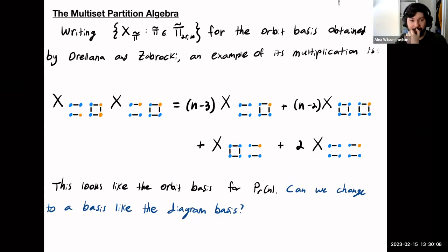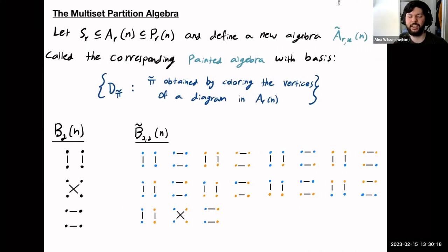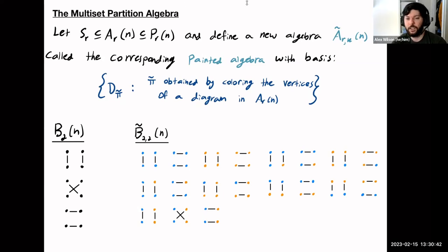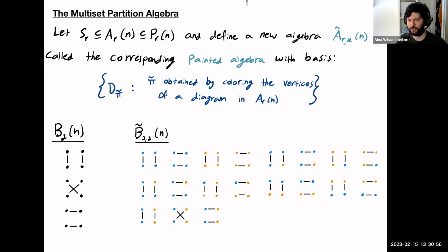The good news is I did. In order to tell you about that, I need to take what might feel like a detour and tell you about another algebra. The setup is I have an algebra A(R,N) sitting inside the partition algebra — think of it as maybe the first four rows of that diagram table — where we have some subset of the allowed diagrams but requiring the symmetric group to be contained there. I'm going to define a new algebra A-tilde(R,K,N), called the corresponding painted algebra. Its basis is given by D-pi-tilde, where pi-tilde is obtained by coloring the vertices of a diagram in A(R,N).